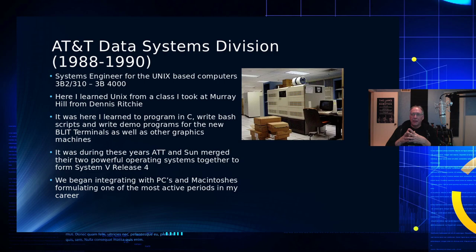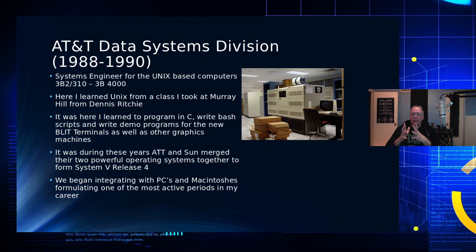I worked as a systems engineer there on the 3B2. The smallest I ever touched was the 310 and the largest was the 3B4000, which was one of the first multiprocessor machines — it had a 3B15 as the central core with 3B2600s you could plug into the backplane. It was the first parallel machine I ever worked around. A fantastic box, and AT&T sent me off to Murray Hill to learn Unix internals — the teacher of the class was Dennis Ritchie himself. I was surprised when he walked into the classroom.